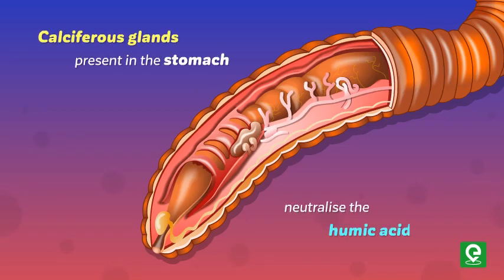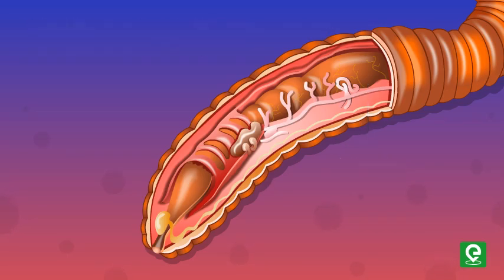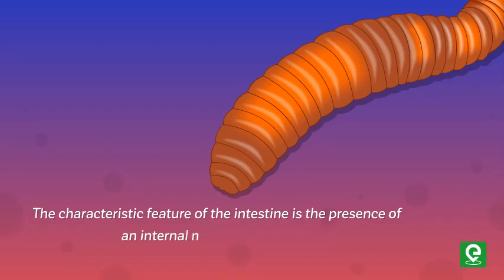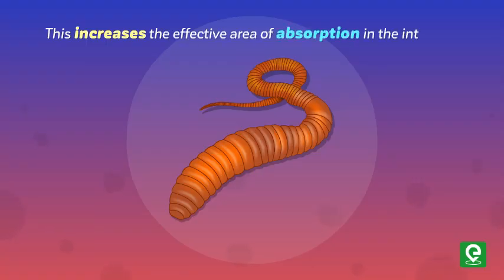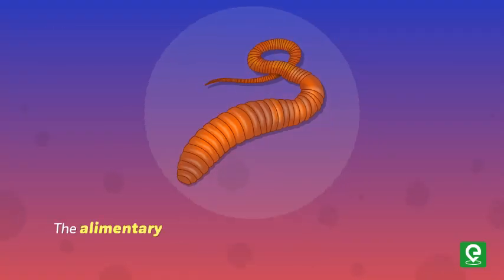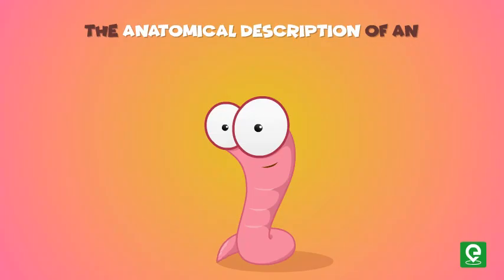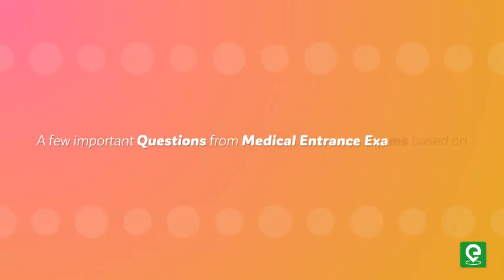The stomach extends from the ninth to the 14th segment. Calciferous glands present in the stomach neutralize the humic acids of the soil. The intestine starts from the 15th segment onwards and continues till the last segment. A characteristic feature of the intestine is the presence of an internal median fold of the dorsal wall called the typhlosole, which increases the effective area of absorption. The alimentary canal opens to the exterior by a small rounded aperture called the anus.